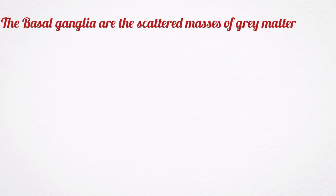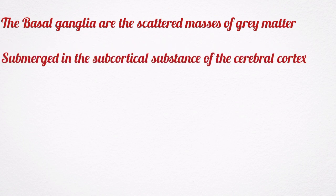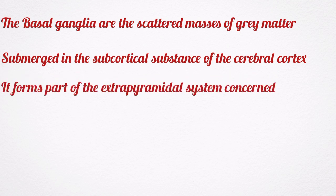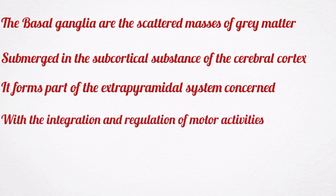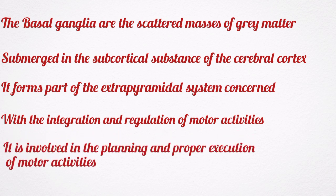The basal ganglia are the scattered masses of grey matter submerged in the subcortical substance of the cerebral cortex. The basal ganglia forms part of the extrapyramidal system, which is concerned with integration and the regulation of motor activities. It is involved in the planning and proper execution of motor activities.